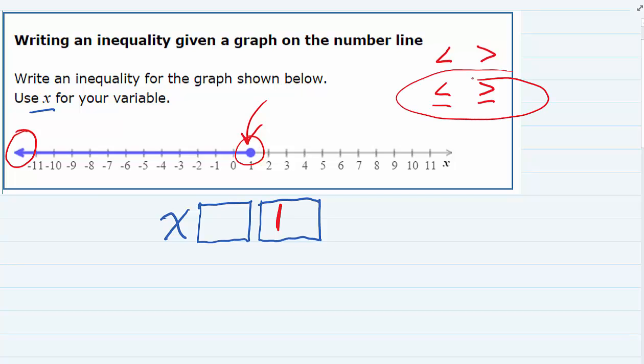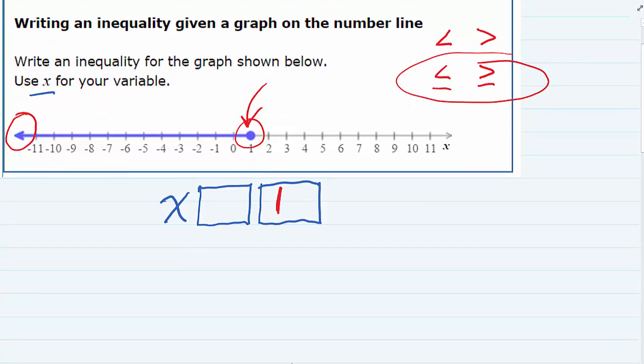And the advantage of putting the variable on the left hand side is that whichever way the arrow is facing, the arrow will match. So that arrow is pointing to the left. This arrow is pointing to the left. So I'm going to put my less than or equal to sign in here.